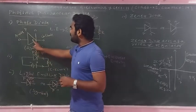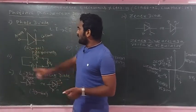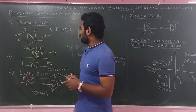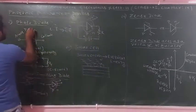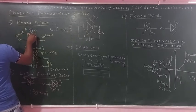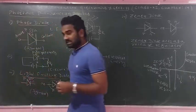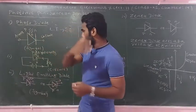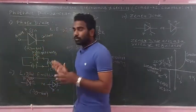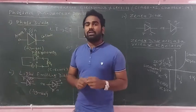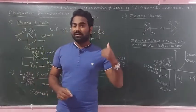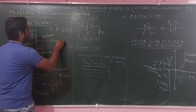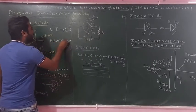Second, the symbol. This is the photodiode symbol. It has a P-type semiconductor and an N-type semiconductor. In a photodiode, light energy is incident on it and is converted to electrical energy. It works on the principle of reverse biasing.